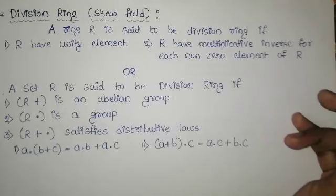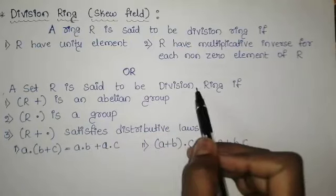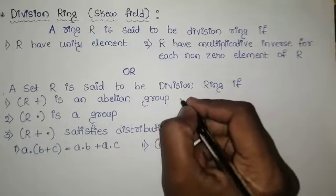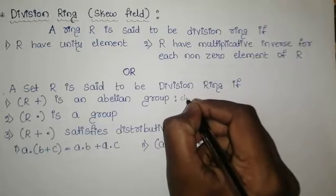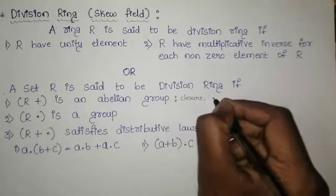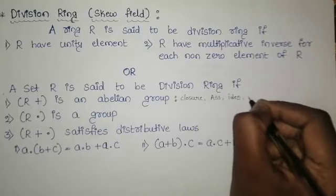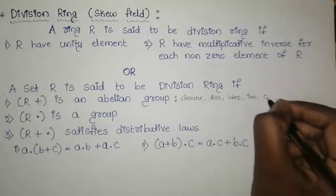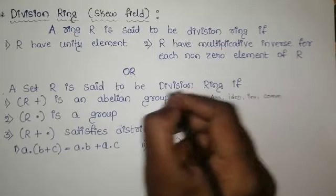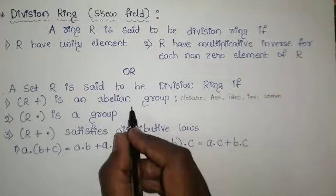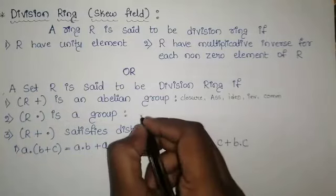Otherwise we can also define it like this: a set R is said to be a division ring if R+ is an abelian group — that means it should satisfy closure law, associative law, identity law, inverse law, and commutative law. If we satisfy all these conditions, then that is known as an abelian group under addition.